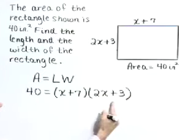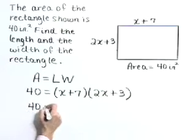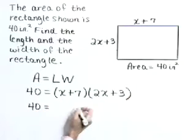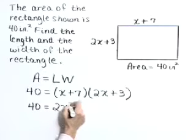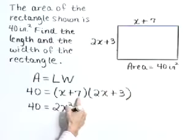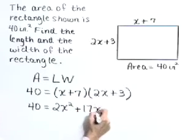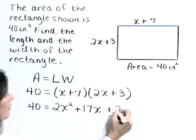So we have an equation. Let's solve it for x. Start by simplifying the right-hand side by foiling. x times 2x is 2x², outer product is 3x, inner product 14x. They sum to a 17x. Lastly, that's a plus 21.